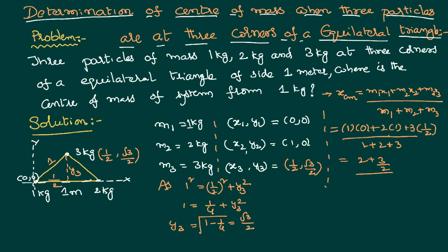By 6, that is 4, 2 and 2 is 4, 4 plus 3 is 7, 7 by 2 into 6, that is equal to 7 by 12 meter. That is x_cm.